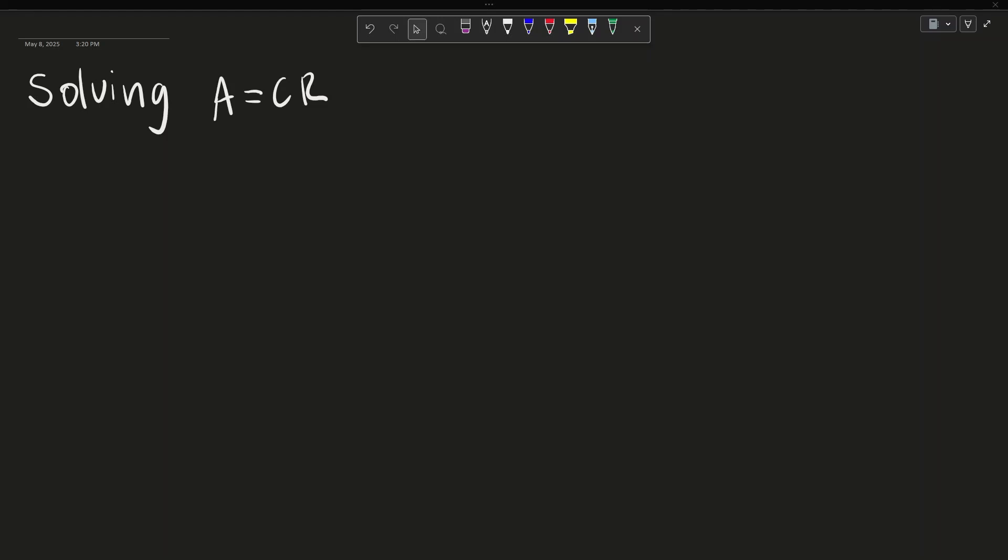The essence of solving the A equals CR system is finding matrices C and R based on the pivots in the row echelon form or reduced row echelon form of A.